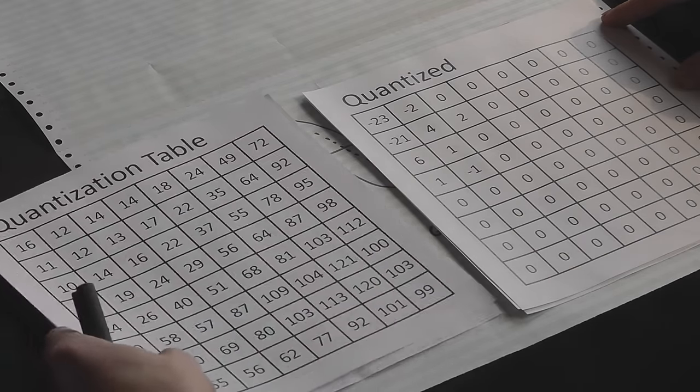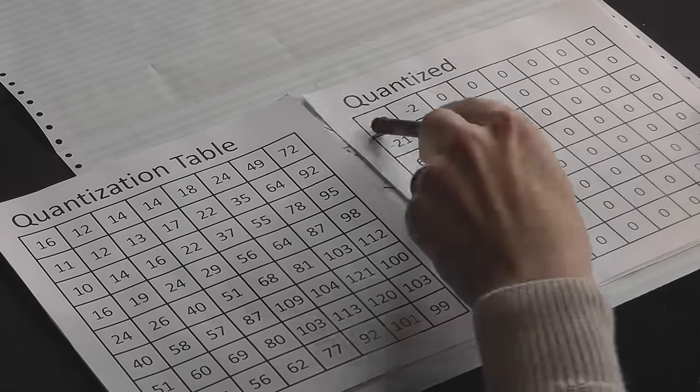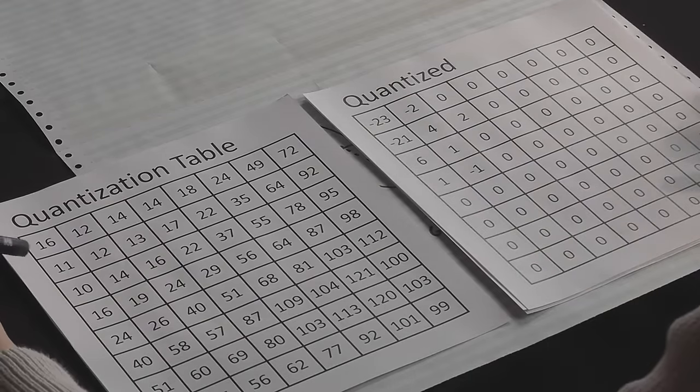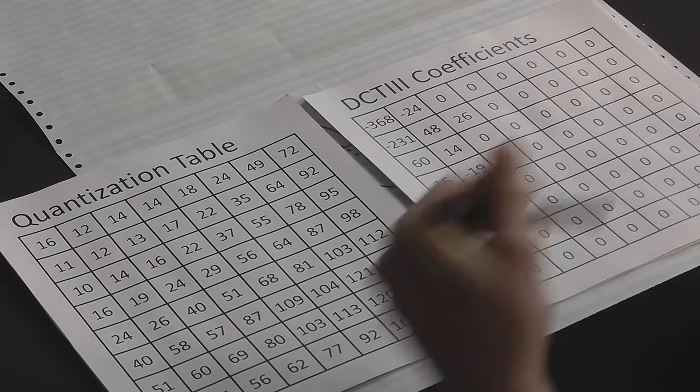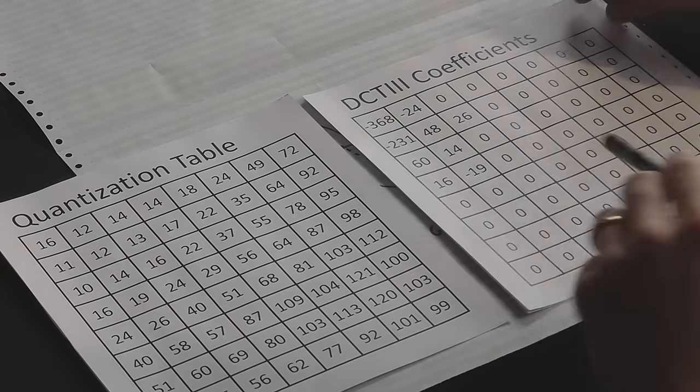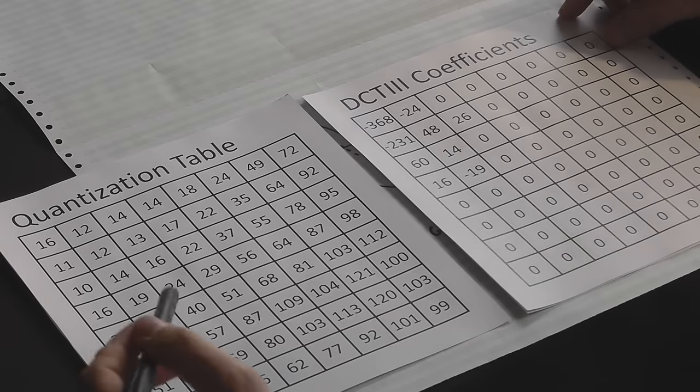So this is the same quantization table. It's stored inside the JPEG, so we know which one they used. Because if you use a different one on the way out, you're going to ruin your image. So we multiply each of these values by the specific value in the quantization table, and we get the coefficients. And you can see that because most of them are nought, most of them on the other side are also nought. So none of these are going to contribute to our image anymore.